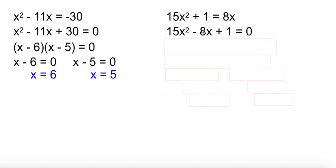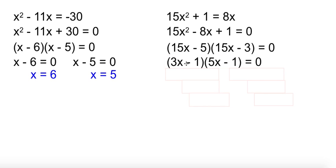Well, 15 times 1 is 15. 1 and 15 doesn't do it. 3 and 5 does. So 15x minus 5 and 15x minus 3. Then we need to reduce, like we learned in 0-3. We'll divide the first one by 5, and divide the second one by 3.